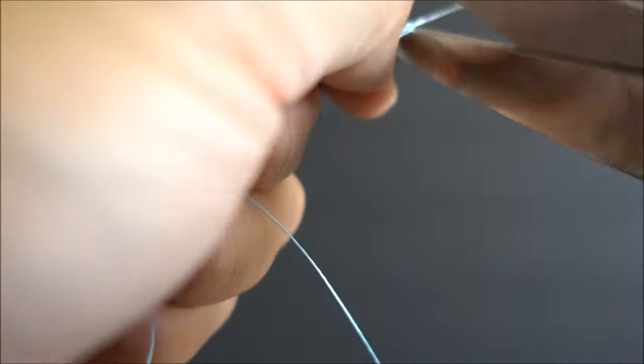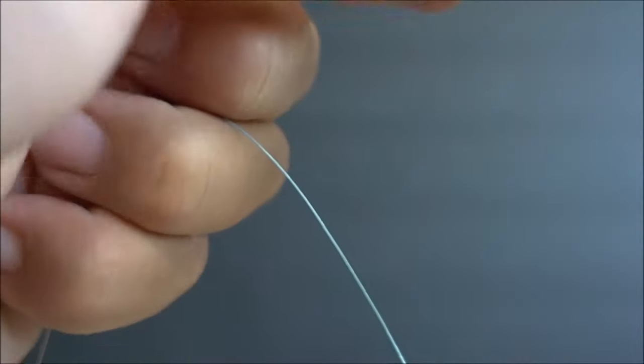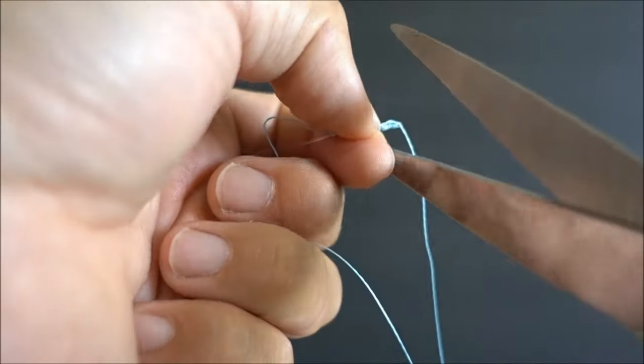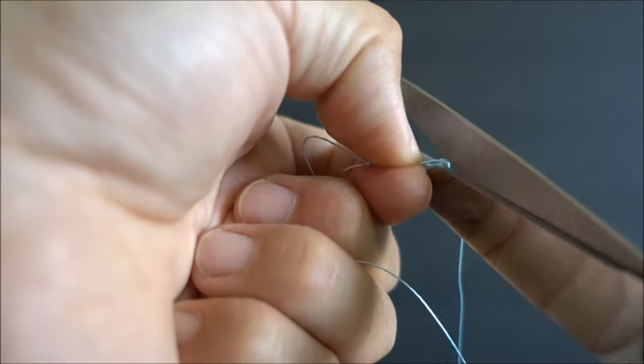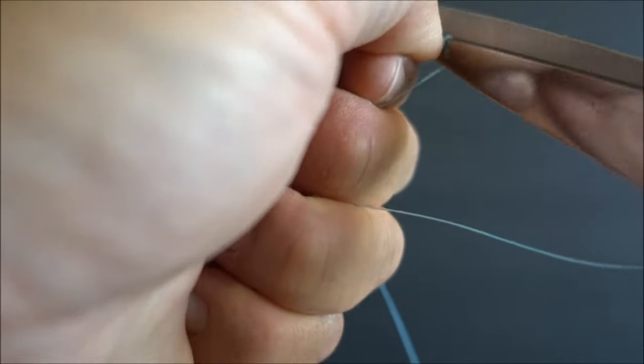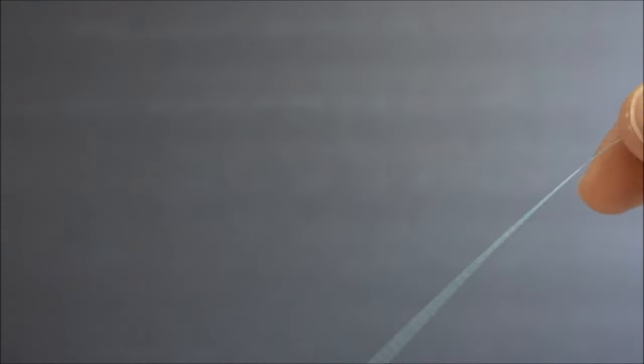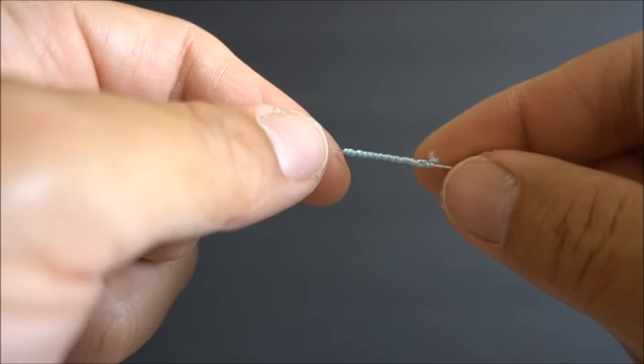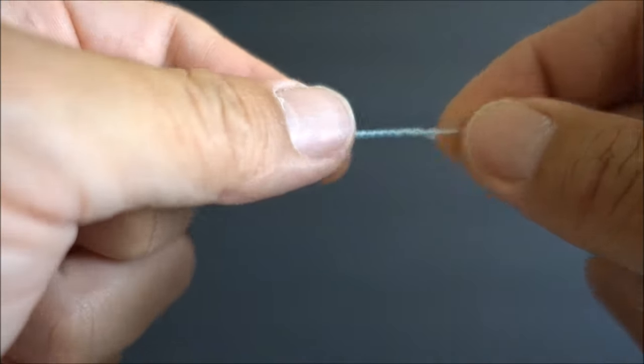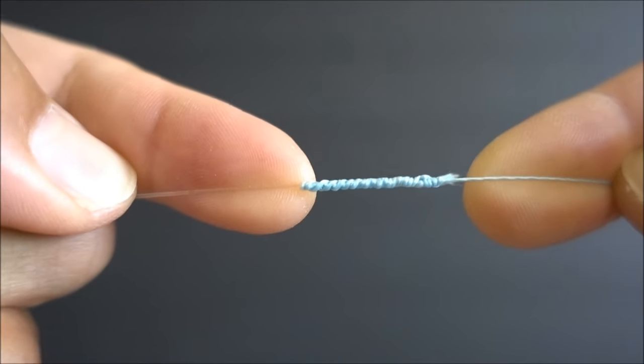All you got to do is trim off the mono end and trim off the braided end. Like so. And you are done. If you like you can apply some super glue at the end of it. I usually don't. There you go. There's the SC knot.